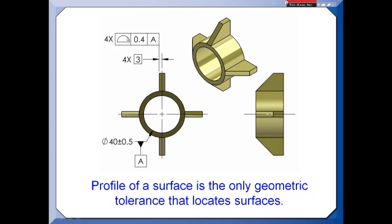Now if they need for the fins to be oriented better than the profile of 0.4, you could certainly add a refinement. That's the hierarchy. You start with location, then you could add a refinement for orientation, or if you needed for the fins to be flatter or straighter, you could certainly add that.